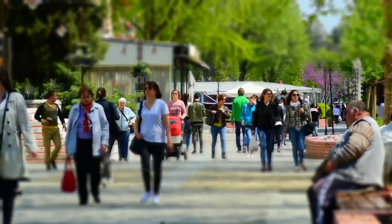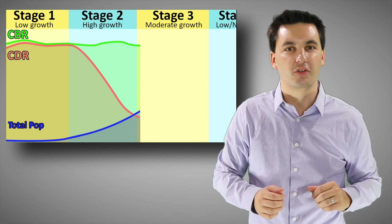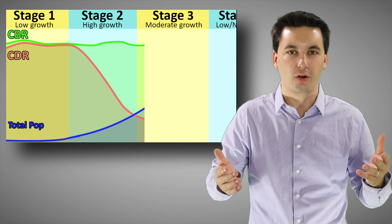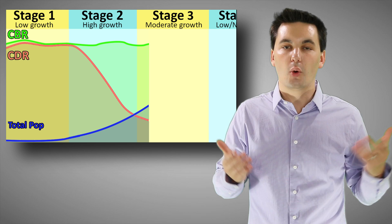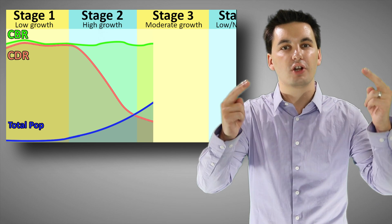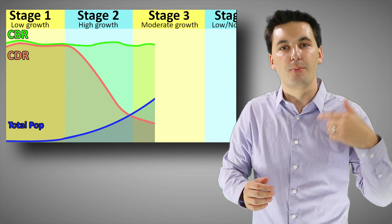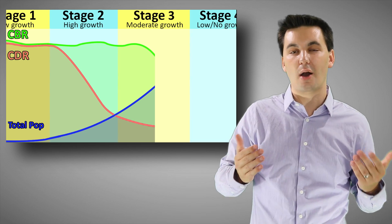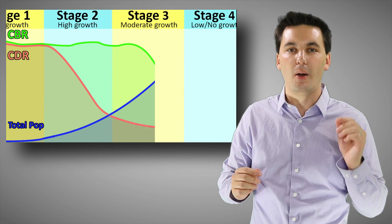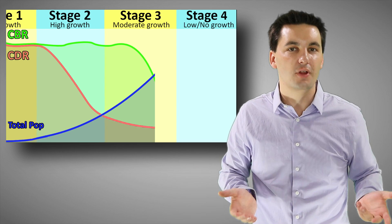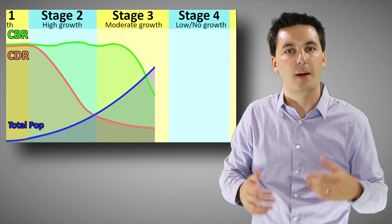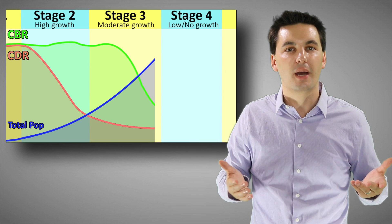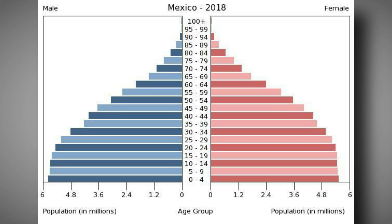Stage three is defined by moderate growth. Women start gaining more opportunities in society — going to school, pursuing jobs and careers — and this reduces the amount of time they have to have families. So our TFR, total fertility rate, starts to decrease and family sizes go down. With more urbanization, the advantages of having large families go away. Our births and deaths are getting closer. We still have a positive NIR, but growth has slowed as society becomes more economically developed.